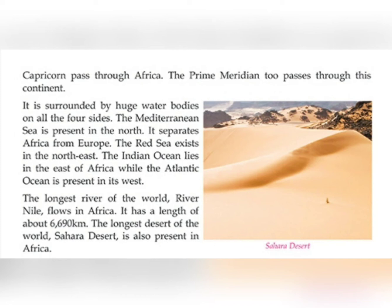Africa is surrounded by water on all sides. The Indian Ocean is to the east of Africa, while the Atlantic Ocean is present in the west.